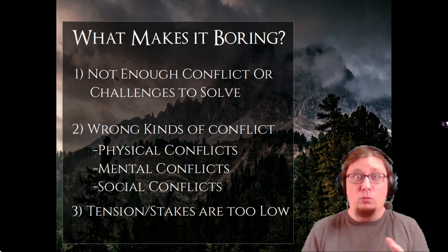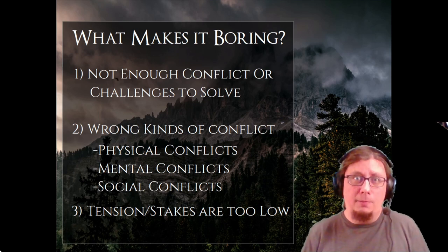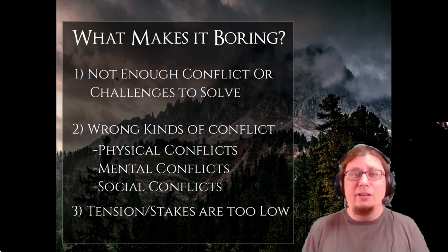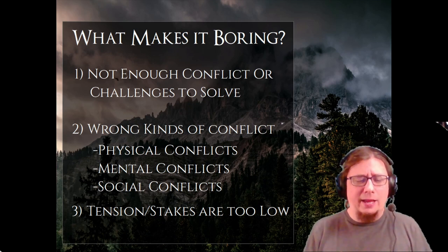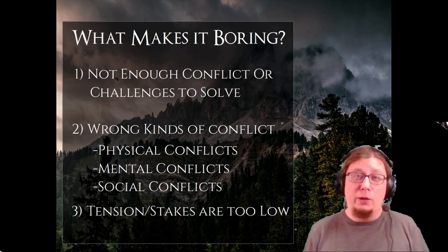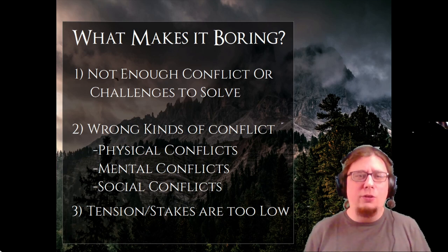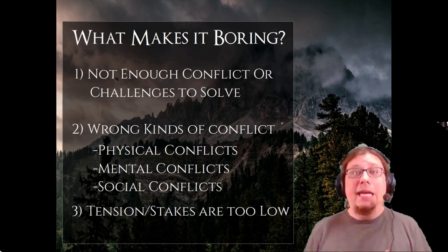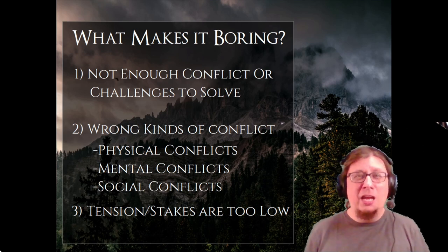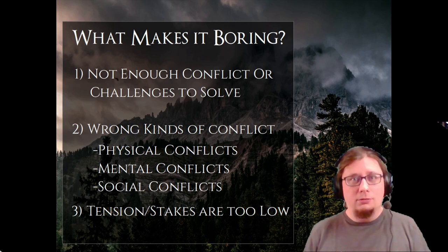Beyond just the issue of risk, how do we fix low tension and stakes? First, identify what are the consequences if the heroes fail — if they don't do the thing or ignore it and do something else, what happens? Identify what is the scope: who does that failure affect? Does it just affect one person, the players, a small village, or a whole kingdom? If you're going to increase the tension and stakes, increase that scope. So if it's only affecting one person, make it affect a whole town; if it's affecting a whole town, make it affect a whole city; and so on.